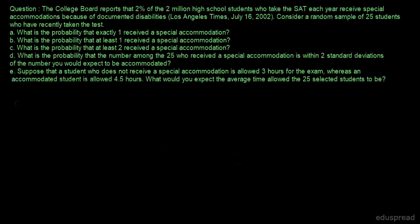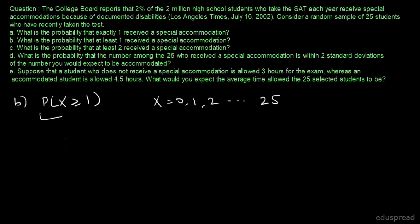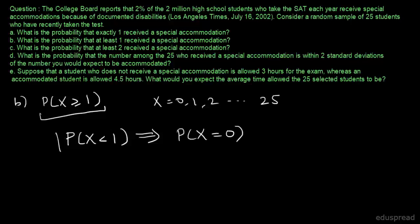In part B, we have to find the probability that at least one received a special accommodation, so P(X≥1). There are 26 possible values of X from 0 to 25. Let's take the complement approach: the complement is P(X<1), which for this discrete random variable equals P(X=0). So P(X≥1) equals 1 minus P(X=0).